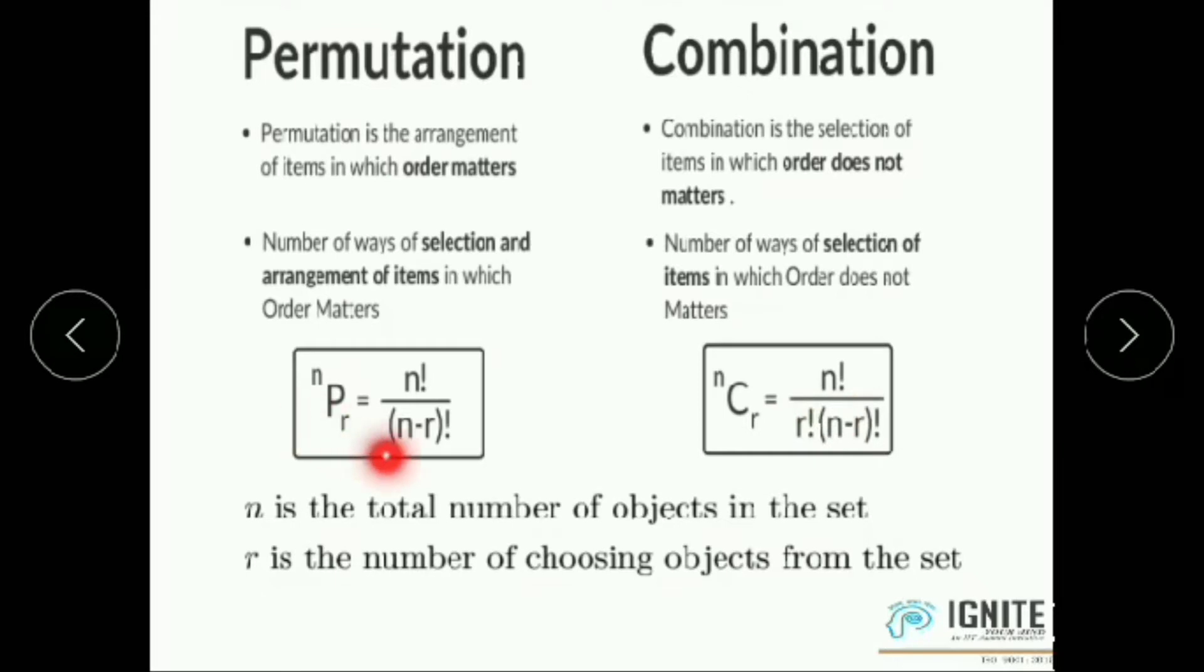The expression for NPR equals N factorial by N minus R factorial and NCR equals N factorial by R factorial into N minus R factorial, where N is total number of objects and R is the number of choosing objects from the set.